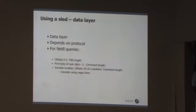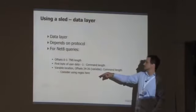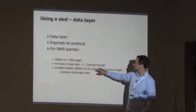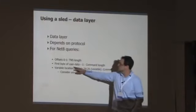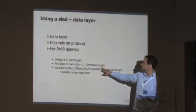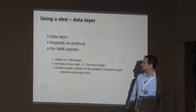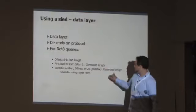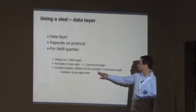For Net8 queries, the sled logic is: we need to change the TNS length. We need to change this command length that we found and identified — it's the first byte of user data minus one. We need to change that to match whatever size our command is. And then there's also another command length somewhere between offsets 24 and 26.